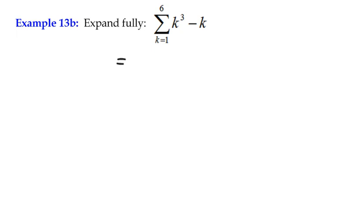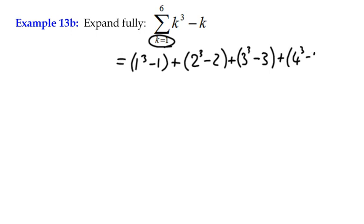So we're really talking about that being, taking the first value of 1, 1 cubed minus 1, plus, what happens when k is 2? 2 cubed minus 2, plus 3 cubed minus 3, plus 4 cubed minus 4, plus 5 cubed minus 5, plus 6 cubed minus 6.